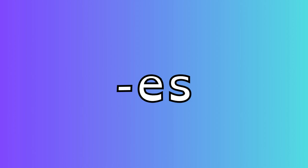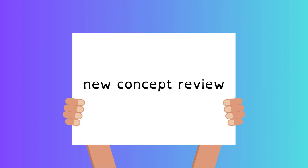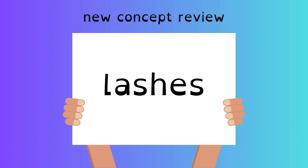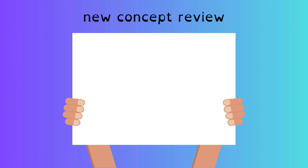-es will always follow words that end with ch, sh, s, x, or z sounds. For example, bunch becomes bunches, box becomes boxes, and buzz becomes buzzes. Glasses, dishes, lashes, boxes, lunches, brushes.